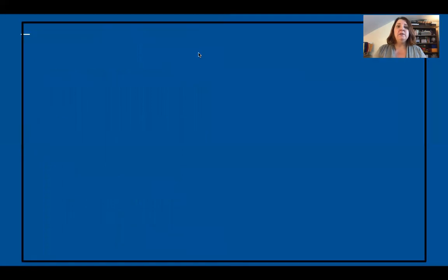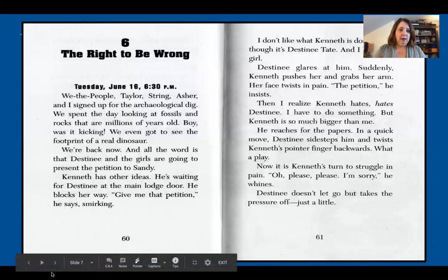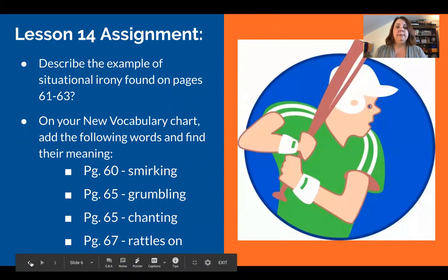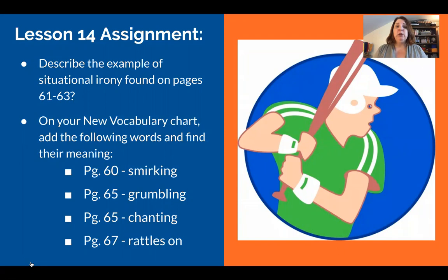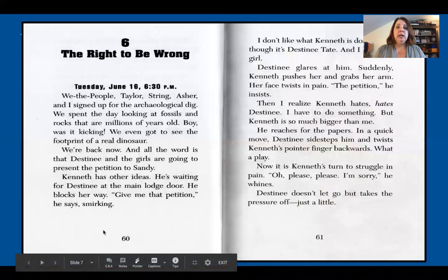Our lesson 14 assignment is going to be this: we're going to describe the example of situational irony that we find on pages 61 to 63. And then we're also going to add to our new vocabulary chart the following words — page 60: smirking; page 65: grumbling; page 65: chanting; and page 67: rattles on. As you read chapter six you're going to put those new words on your chart and say what you think they mean in your own words.